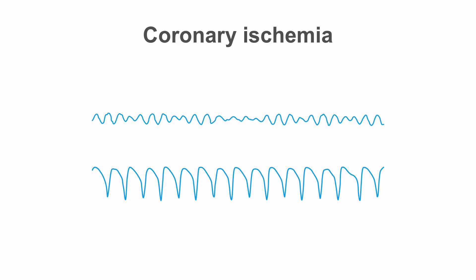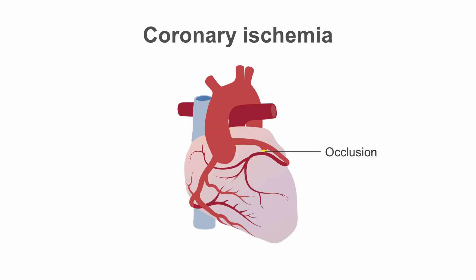Coronary ischemia is the most common cause for ventricular dysrhythmias. For patients with ventricular tachycardia or ventricular fibrillation without an apparent alternate cause, emergent coronary angiography should be considered in order to potentially open an occluded vessel.